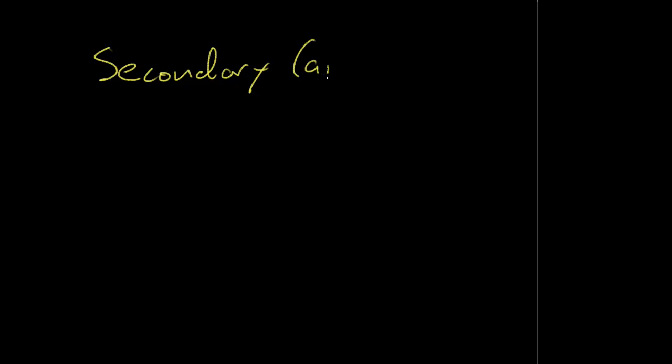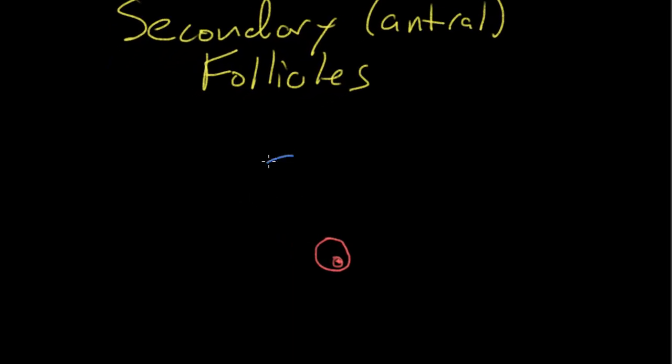So, let's move on then to secondary follicles. And these are also known as antral follicles. Now, these follicles, so once again, we're going to have an oocyte and things are going to get a little smaller as far as the oocyte goes, because we've got to zoom out a little bit. So, there's our oocyte.